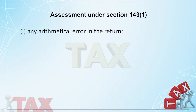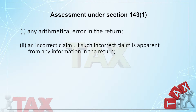However, the assessing officer may make certain adjustments or corrections. These include arithmetical errors such as totaling errors, and incorrect claims — for example, a deduction claimed under the wrong section, like claiming under Section 80D instead of 80DD or 80DDB. If such an incorrect claim is apparent from the return — say, claiming a deduction for maintenance of dependent family members under the section for medical insurance for self — the assessing officer may make the necessary adjustment and correct it, even without any willful intention to evade taxes.